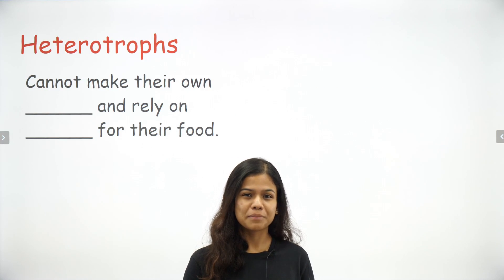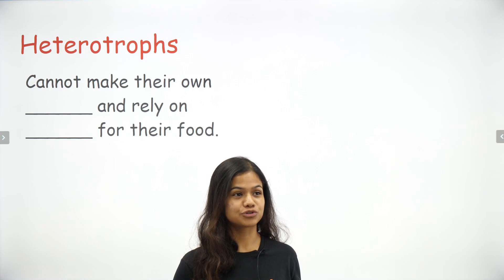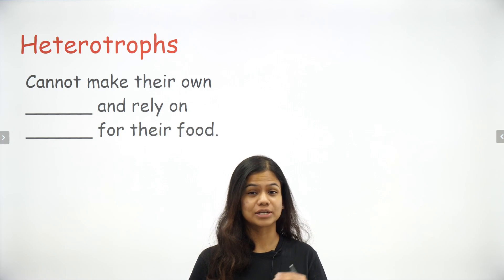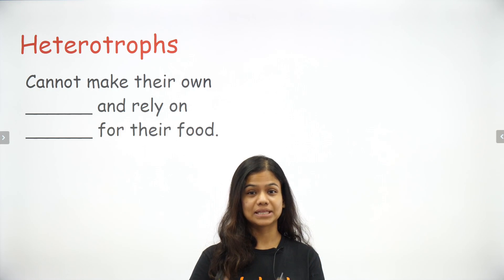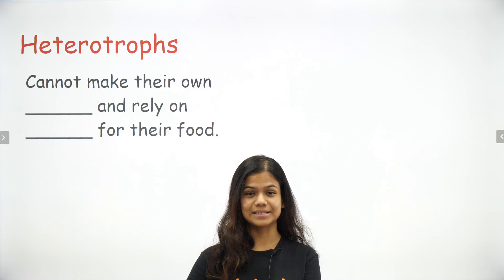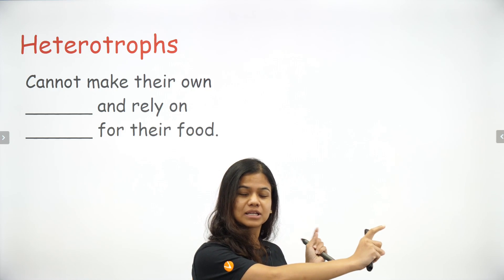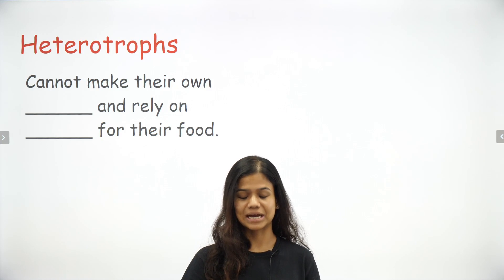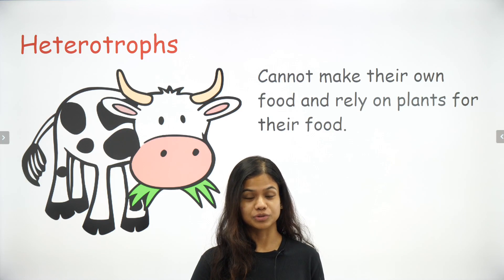Let's try to understand what heterotrophs are. Heterotrophs cannot make their own food and rely on plants or other animals for their food. So directly or indirectly, they rely upon plants — because the animals that they eat actually eat plants. Remember the story of a lion who died because all the trees vanished from the jungle? That's exactly what it is — heterotrophs cannot make their own food and rely on plants or other animals for their nutrition.